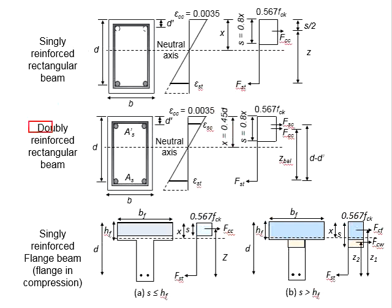For the doubly reinforced beam, the compression steel bar does not necessarily have to be yielded. It may have yielded or may not have yielded. You will need to check whether it yields for you to determine the forces due to the compressive steel bar.